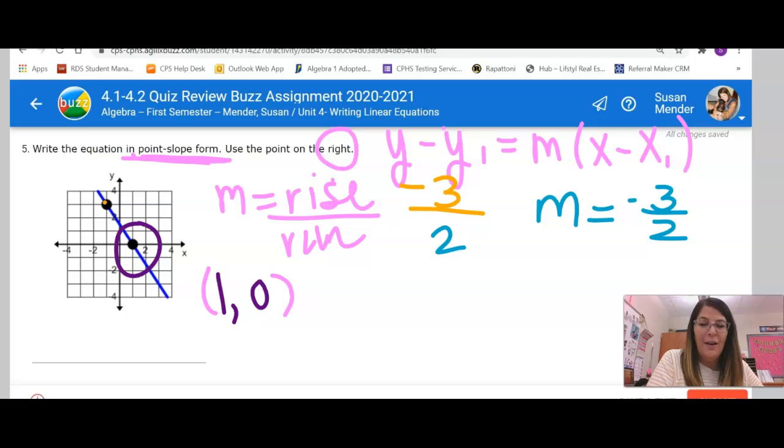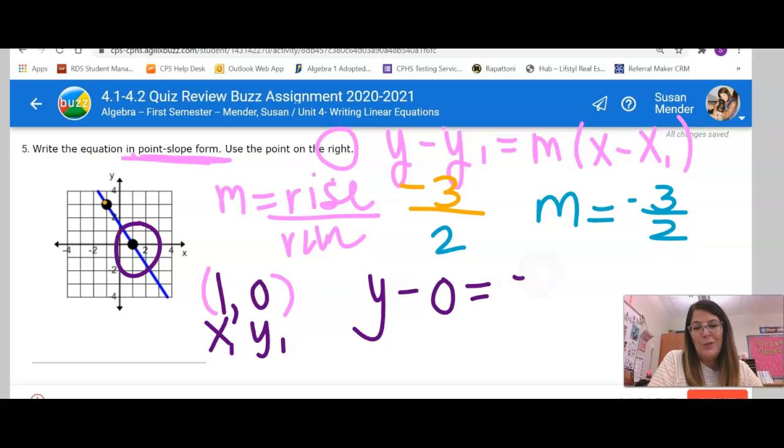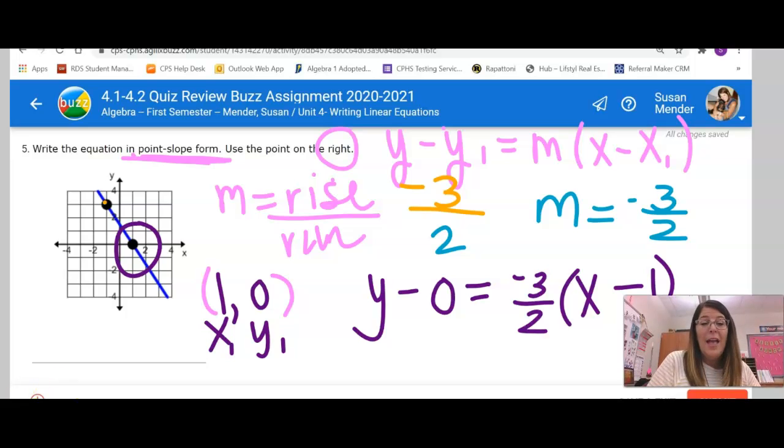So now I'm going to plug that in there. This is the x₁ and the y₁. So I've got y minus zero equals negative three halves, parentheses, x minus one. All right. Now, if I'm writing it in point-slope form, it's okay to leave the minus zero there. If I was writing in another form where I had to do something with it, I would not leave that there.